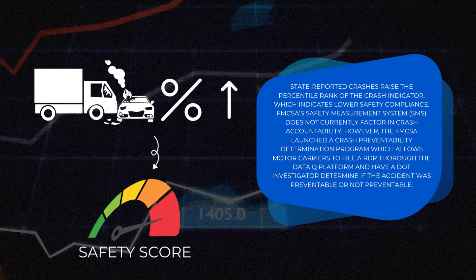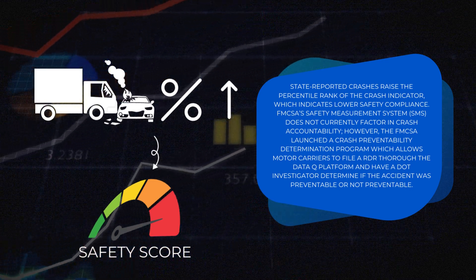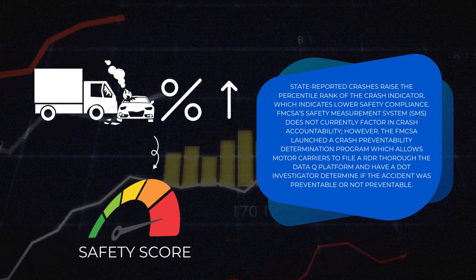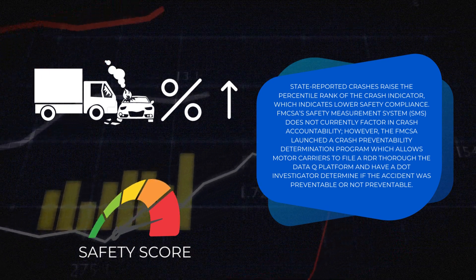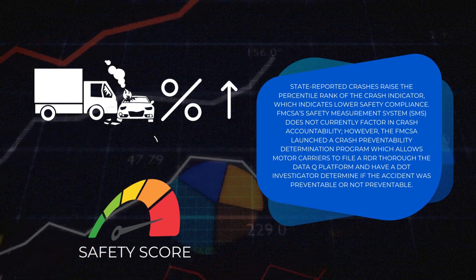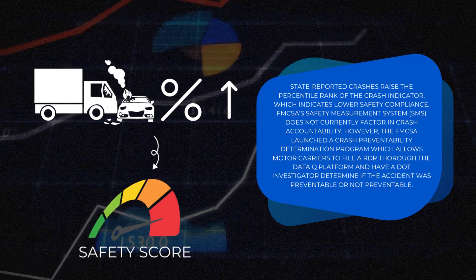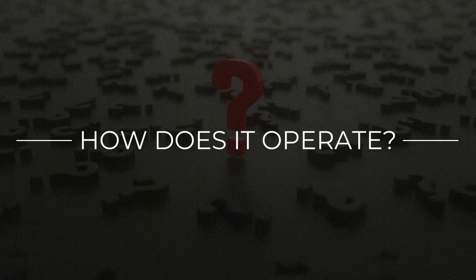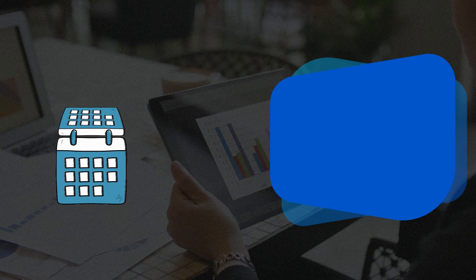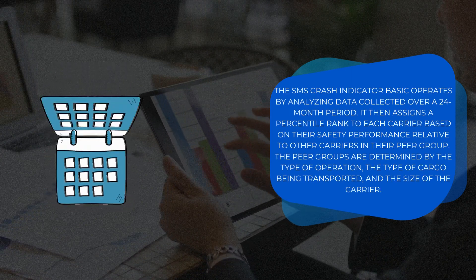State-reported crashes raise the percentile rank of the Crash Indicator, which indicates lower safety compliance. The FMCSA Safety Measurement System does not currently factor in crash accountability. However, the FMCSA launched a Crash Preventability Determination Program, which allows motor carriers to file a Request for Data Review (RDR) through the DataQs platform and have a DOT investigator determine if the accident was preventable or not preventable.